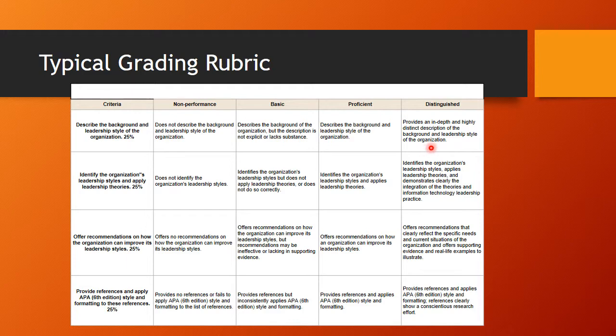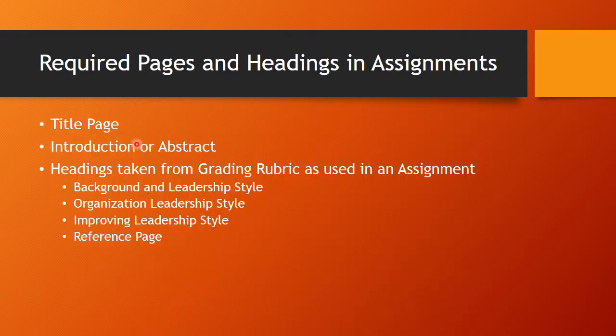Let me take this one more step. When you're writing your paper, remember this first criteria is describe the background and leadership style of the organization. We use an APA writing format, and I'll give you that URL in just a second. I'll expect a title page. I'll expect an introduction — that can be a paragraph; five or six sentences is usually enough to really cover your introduction or abstract. In the body of the paper, I'm looking for headings, and they should be in the same order as in the grading rubric — they should not be mixed up or back and forth. I should see the exact same headings that are in the criteria in the grading rubric in your assignment.